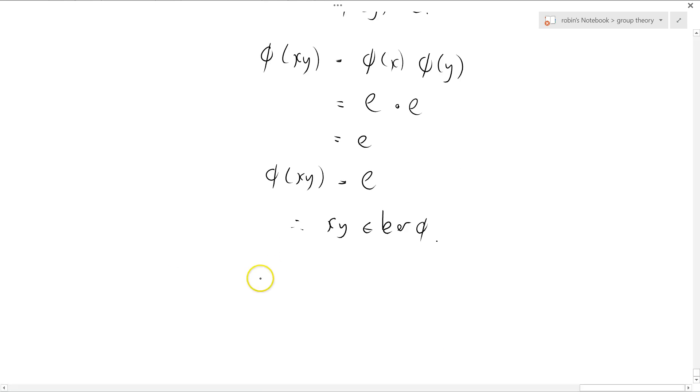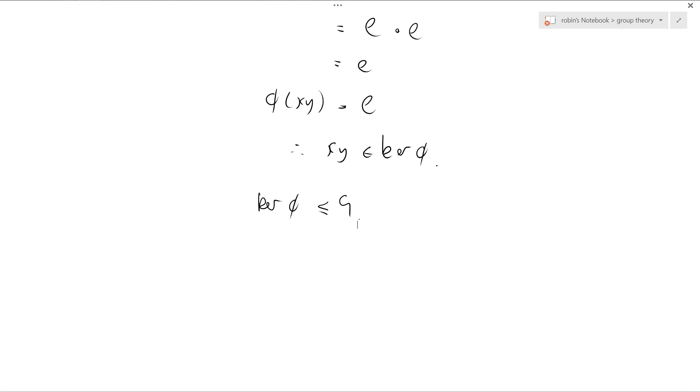So we've proved that ker phi is a subgroup of G. Now I want to prove something a little bit more, a stronger result. I want to prove that the kernel of phi is a normal subgroup of G.